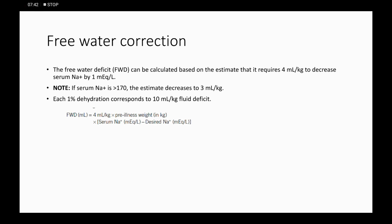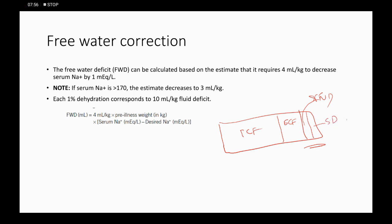For free water correction: the total deficit includes both free water deficit and solute deficit. The free water deficit formula depends on whether serum sodium is less than or greater than 170. If less than 170: free water deficit = 4 ml/kg × pre-illness weight × (serum sodium minus desired sodium). The desired sodium should not drop more than 10 mEq in 24 hours, so it will typically be 10. For a 10 kg baby: 4 × 10 × 10 = 400 ml.